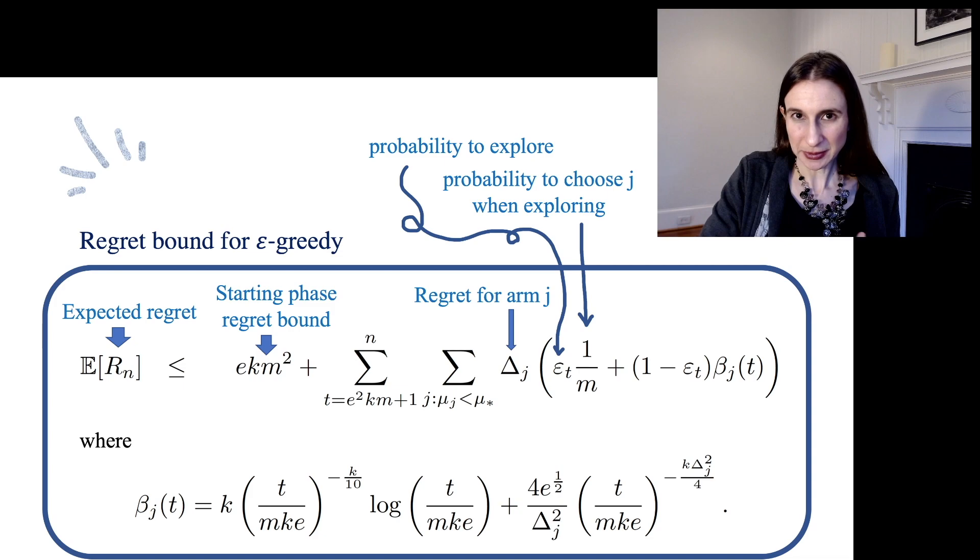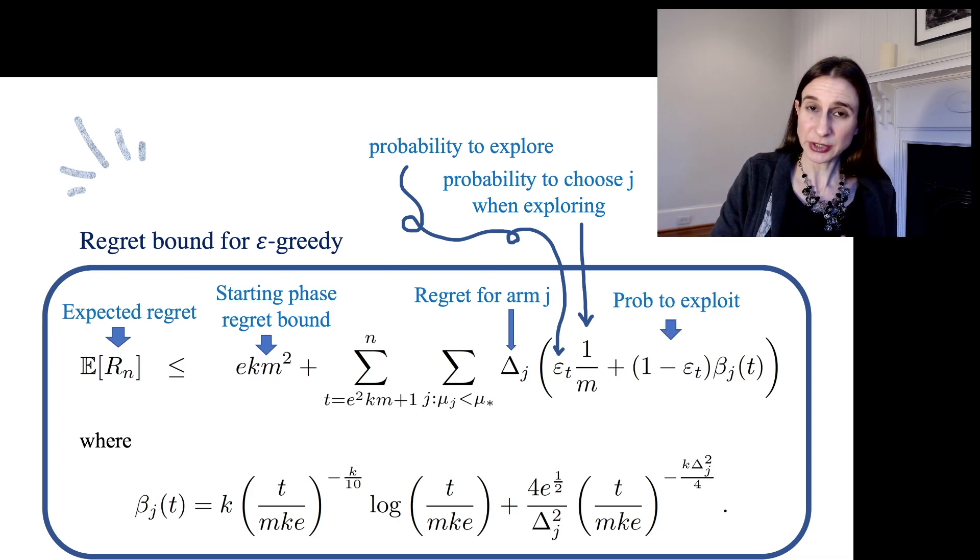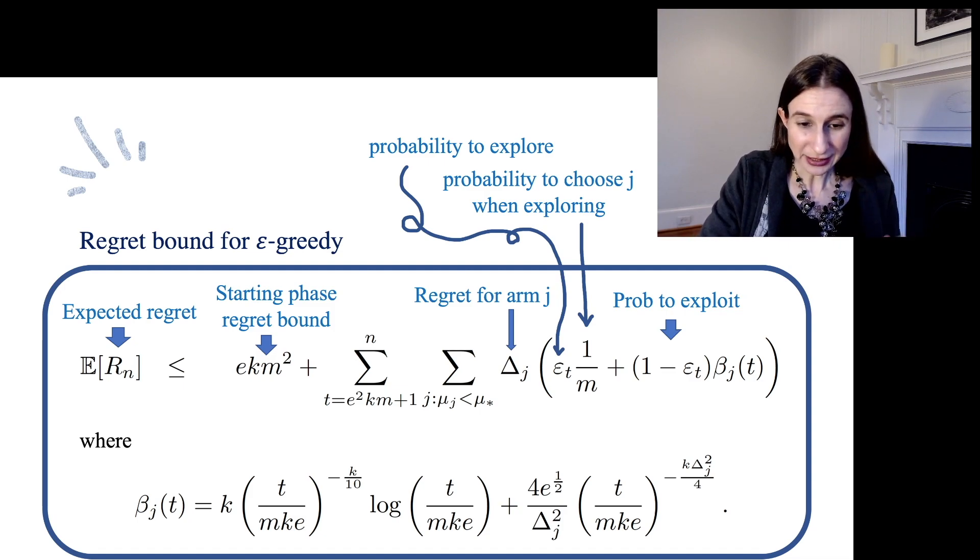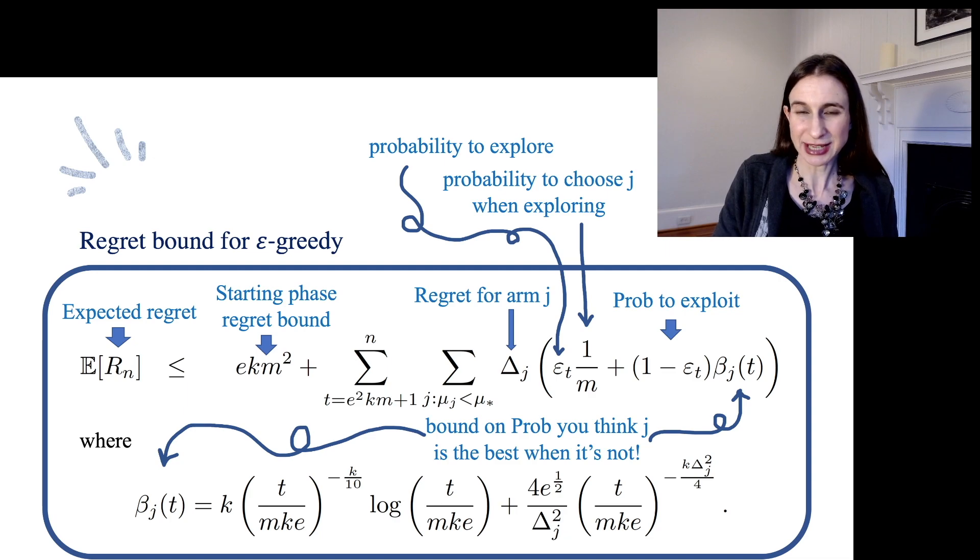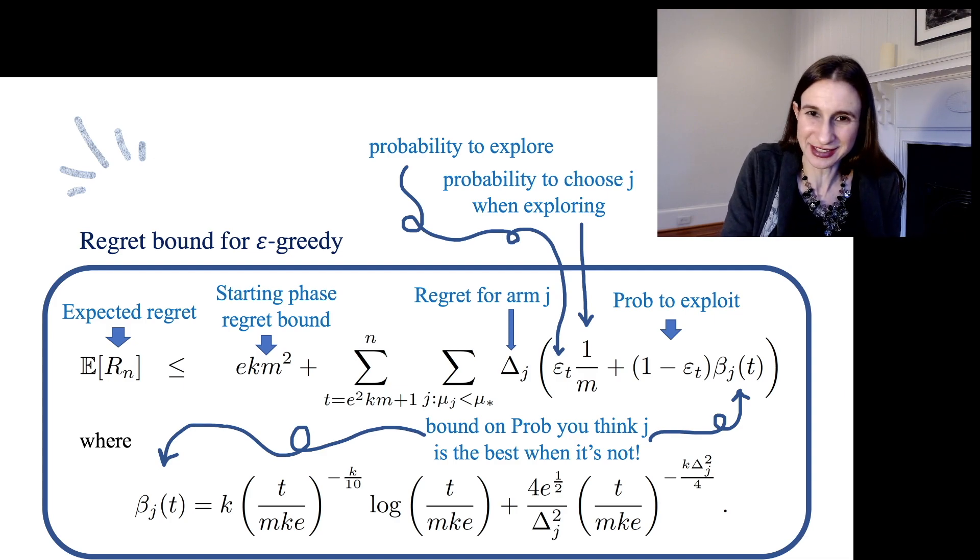The other term is for exploiting, and we do that with probability 1 minus epsilon. This β, when do we exploit and choose arm j? It's when we think arm j is the best when it's actually not. So beta is actually a bound on the probability that you think arm j is the best when it's actually not, and most of the work in the theorem actually goes into just defining what this β_j term actually is.